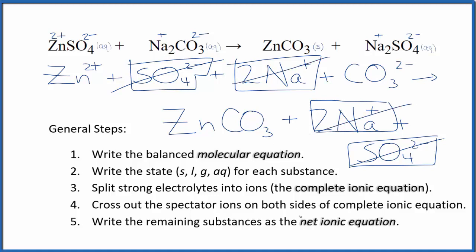Those are spectator ions. What's left? We have the net ionic equation here for zinc sulfate plus sodium carbonate. I'll clean this up and write the states. We'll have our net ionic equation.